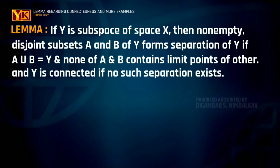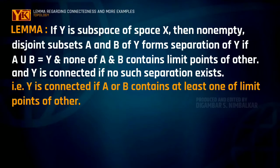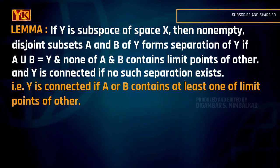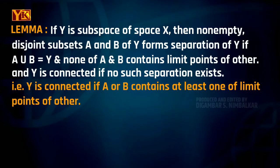Y is said to be a connected space if there exists no such separation. That is, subspace Y is said to be connected if either A or B contains at least one limit point of the other. So if Y = A ∪ B such that A contains at least one limit point of B, or B contains a limit point of A, then Y is connected. Otherwise the space will be disconnected.